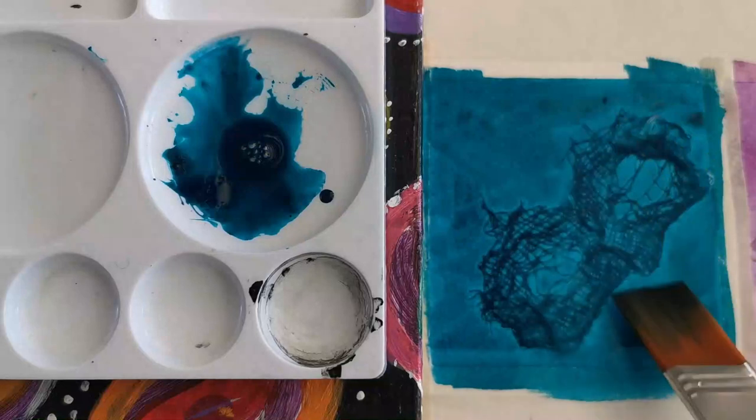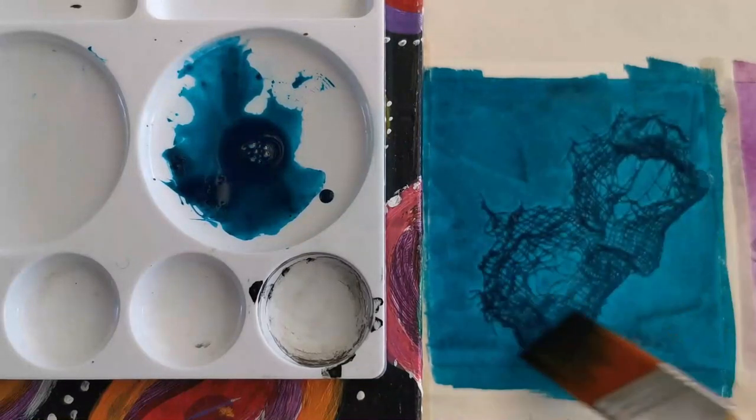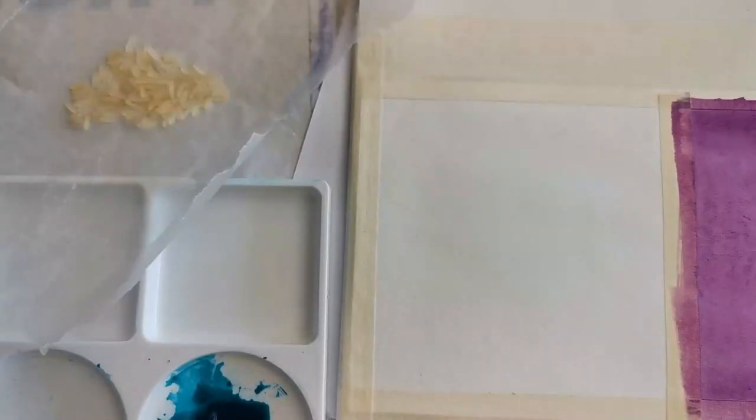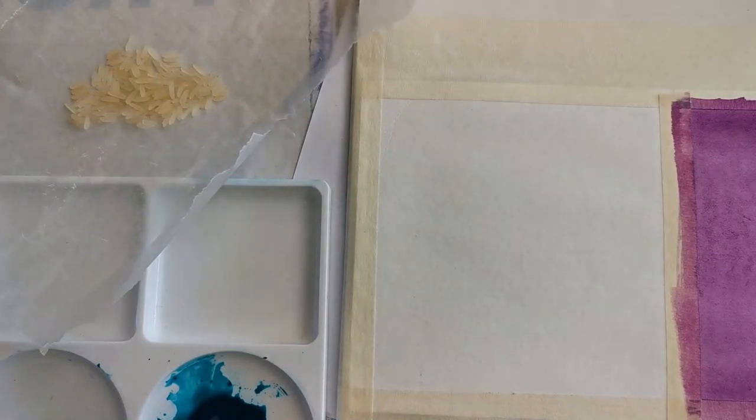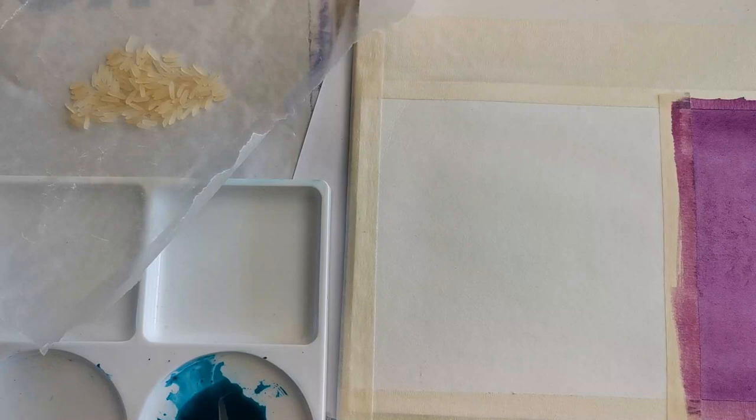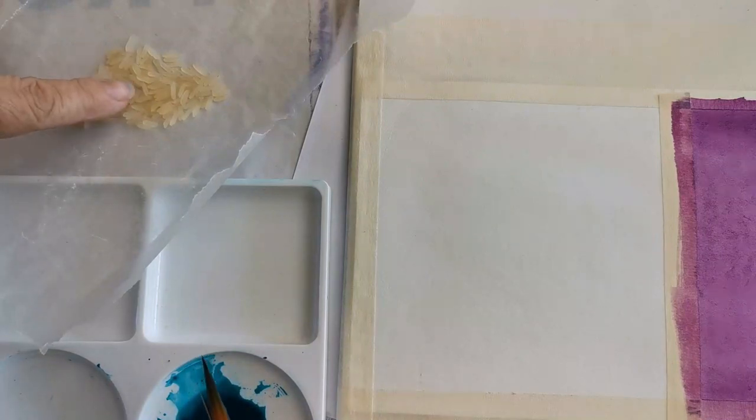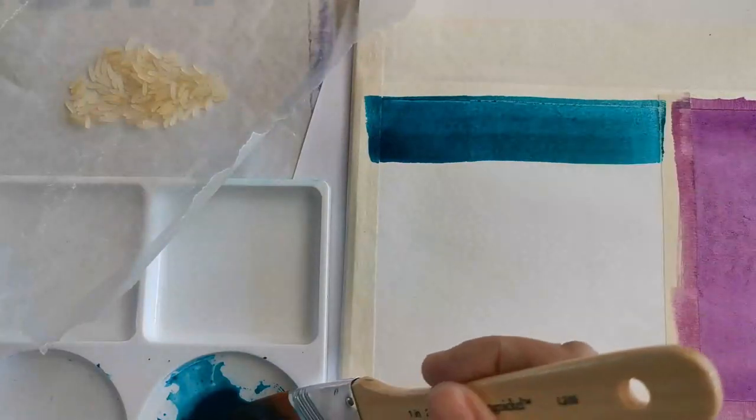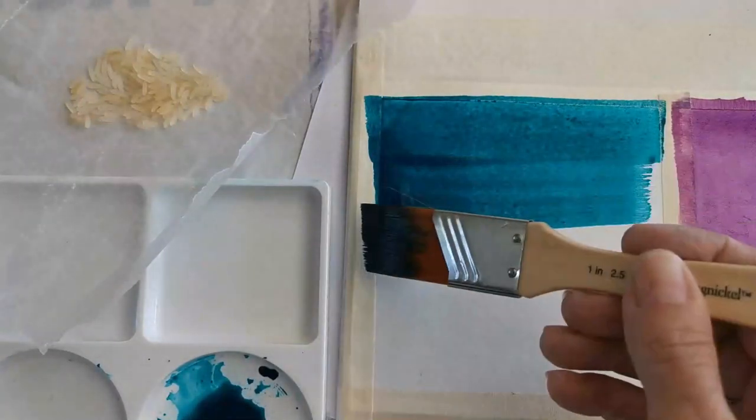So I'm going to let this dry. As soon as it's dry, I'll show you how it looks like. If you would like me to show you other techniques as well, you're welcome to leave a comment in the comment section. And I'll do it for you. So now I'm going to use rice, ordinary rice. I'm first going to put a runny layer of my acrylic inks.